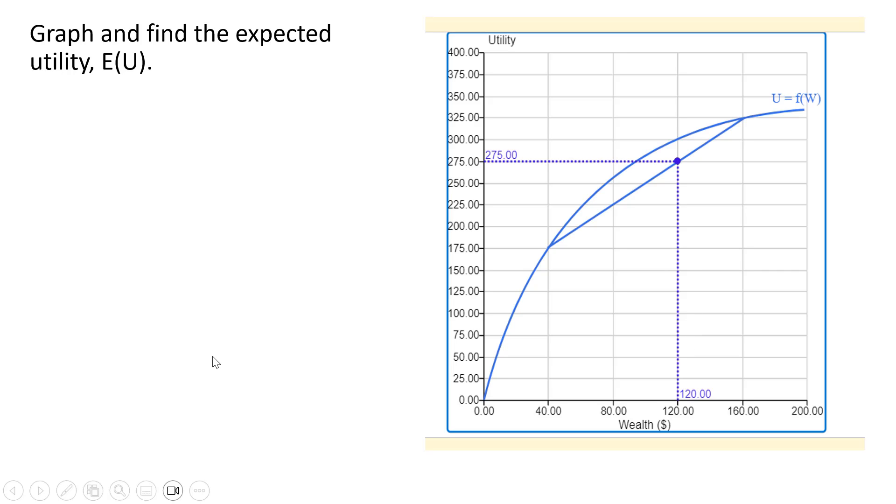Now we graph the expected utility. We take that $120 and move it up to this chord, the expected utility chord, and come across to get a utility value of $275. So expected utility is $275.